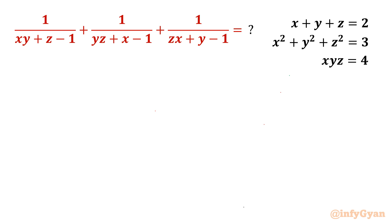Welcome back to Infigyan friends. In this video we are going to take up one very interesting and challenging question from algebraic expressions. We have a system of three equations: x plus y plus z equals 2, x squared plus y squared plus z squared equals 3, and xyz equals 4. We have to evaluate the expression 1 over (xy plus z minus 1), plus 1 over (yz plus x minus 1), plus 1 over (zx plus y minus 1).